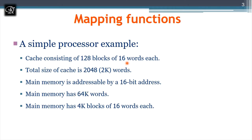The word size does not vary from RAM to cache — it is fixed. With 16 words per block, dividing 64K by 16 gives the total number of blocks in main memory: 4K blocks in main memory versus 128 blocks in cache.